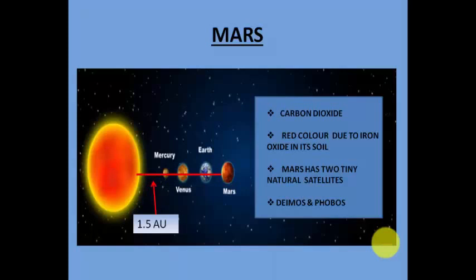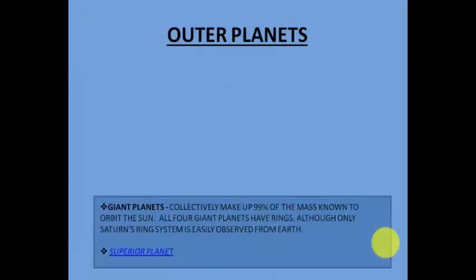Mars has only two tiny natural satellites, named Deimos and Phobos. Most of us only know about our Moon, the natural satellite of Earth, but other planets also have natural satellites. Mars, Earth, Venus, and Mercury are called the inner planets because they are closer to the Sun.